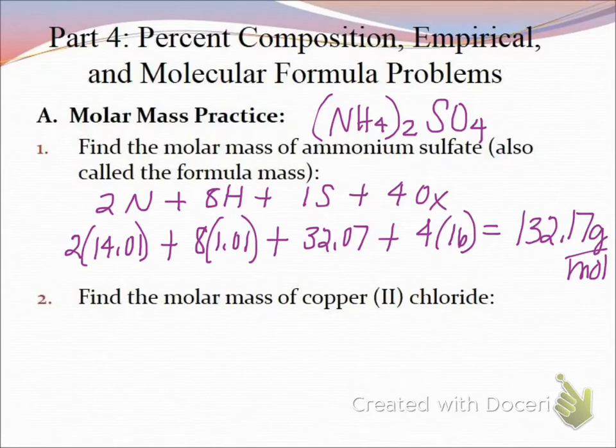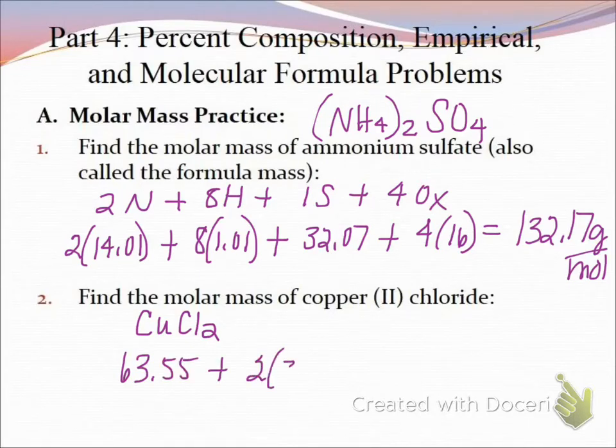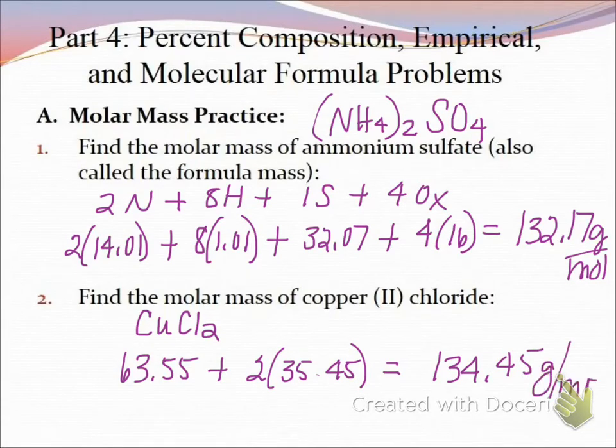So this other one would be find the molar mass of copper(II) chloride. So it would be CuCl2. Try that very quickly in your calculator. Copper is 63.55 plus 2 times 35.45. We get 134.45 grams per mole. Does anybody agree with that? We should always check.